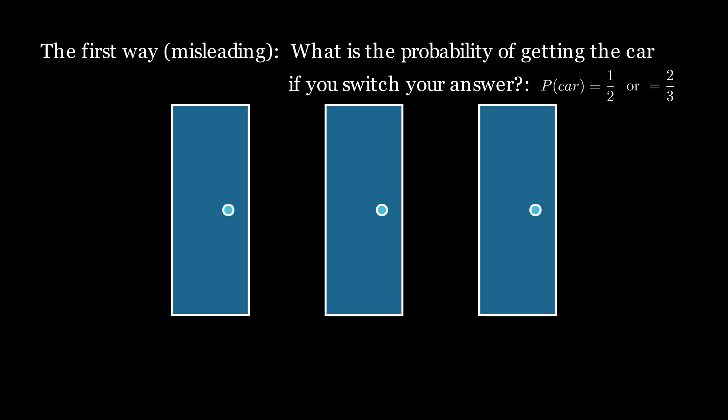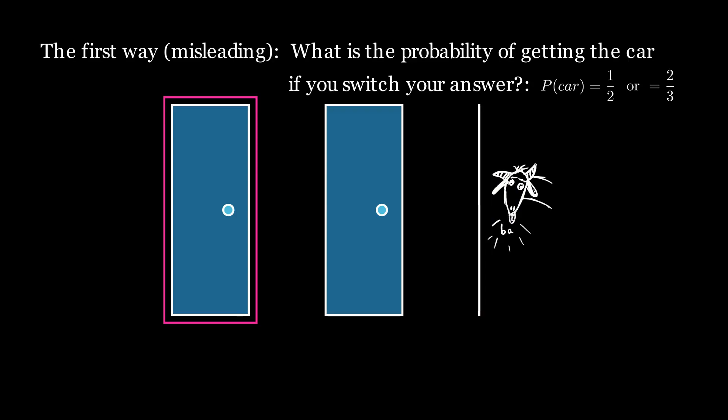The explanation for such a different answer is this. That there is a two in three chance of picking a goat door the first time and that the other goat door is removed and then when you switch you can only switch to the car door.